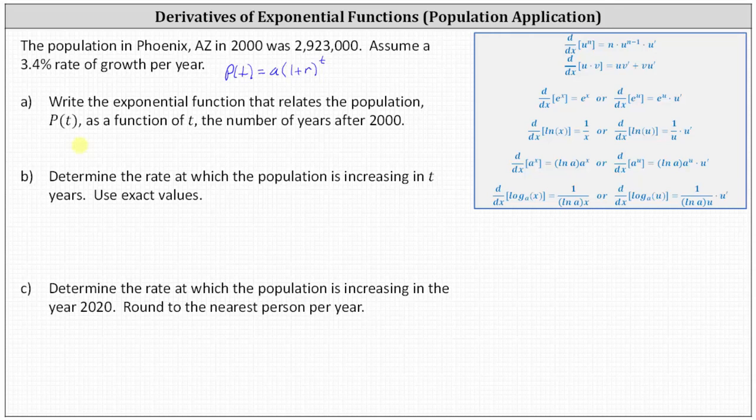This indicates for part A we have P of T equals 2,923,000 times 1 plus 3.4% as a decimal is 0.034 raised to the power of T. Let's go ahead and add inside the parentheses and write P of T as P of T equals 2,923,000 times 1.034 raised to the power of T.